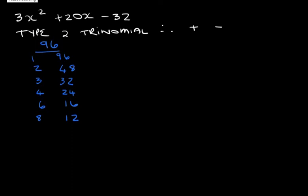So these are the factors of 96: 1 and 96, 2 and 48, 3 and 32, 4 and 24, 6 and 16, 8 and 12. Which of these pairs add up to positive 20? If the 4 is negative and 24 is positive, this will give us positive 20.